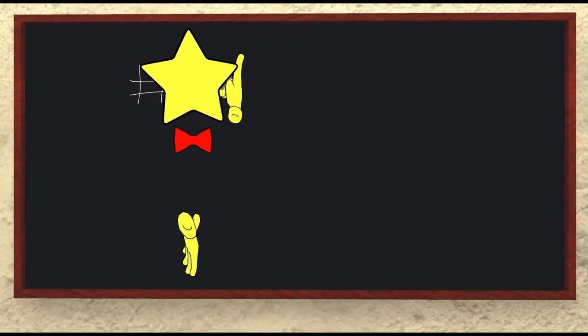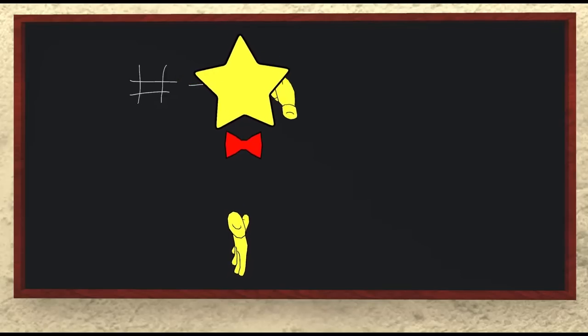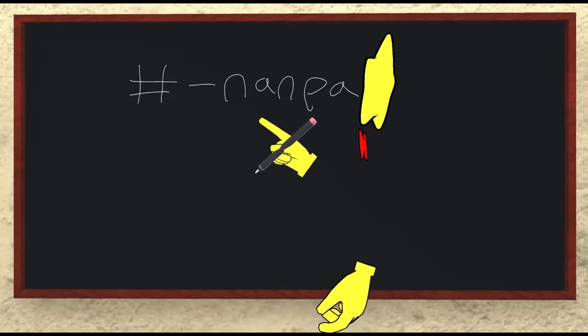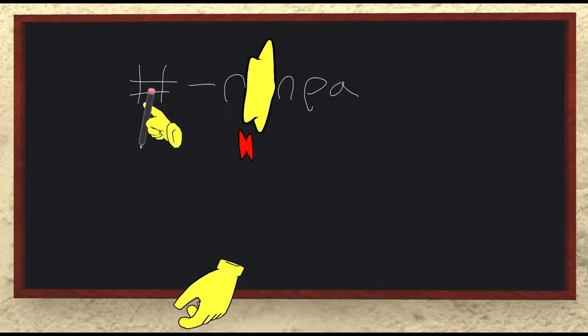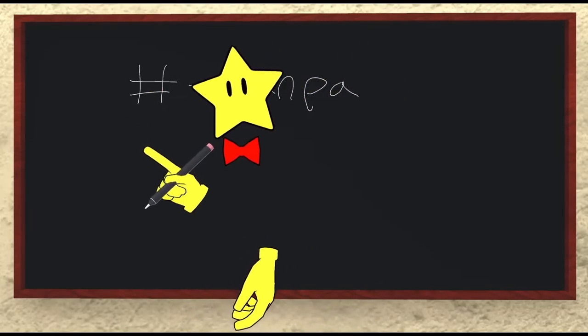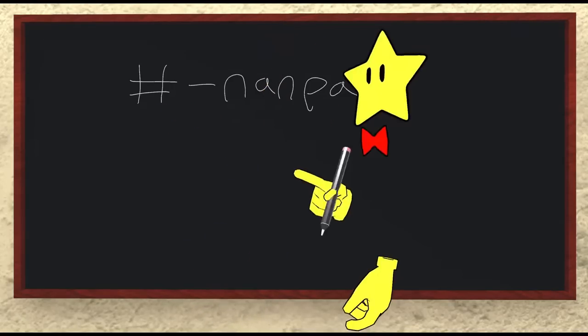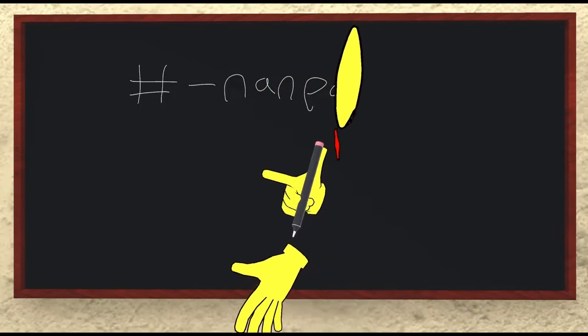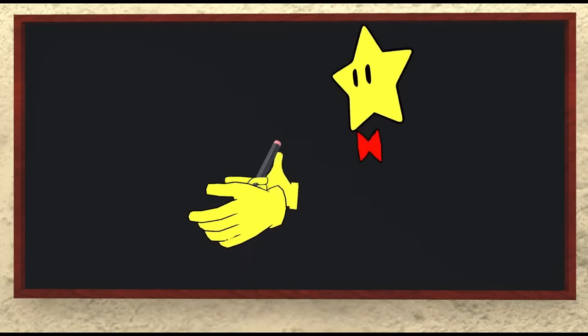Next, we have nanpa, N-A-N-P-A. Now, nanpa is drawn with this hash shape, two vertical lines and two horizontal lines, and it has to do with numbers. We'll get to how it works as a particle in a bit. Next, we have a couple of content words to get to.